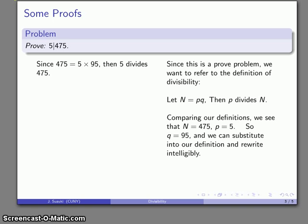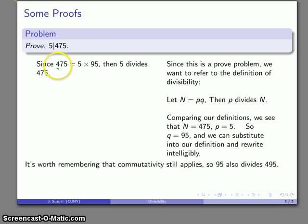A useful idea to keep in mind: commutativity still applies. So if 475 is 5 times 95, then it's also 95 times 5, and I can reverse the two factors and say that 95 is also a divisor of 475.